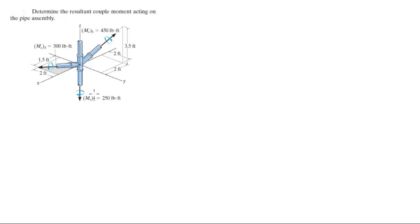For more videos visit ForTheSakeOfEducation.com. Alright guys, I want you to find the resultant couple moment acting on the pipe assembly. This problem is a little different because they give you the magnitudes of three couple moments and they give you where they're aiming.